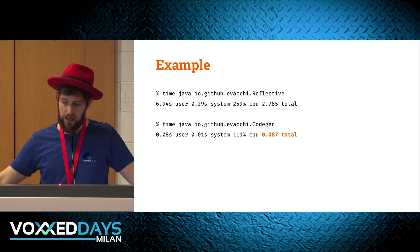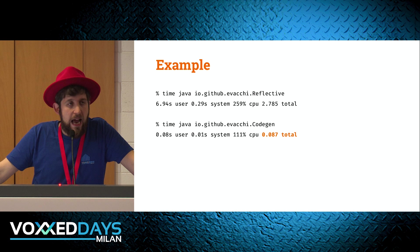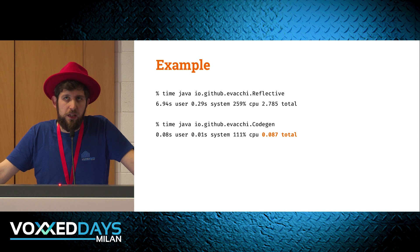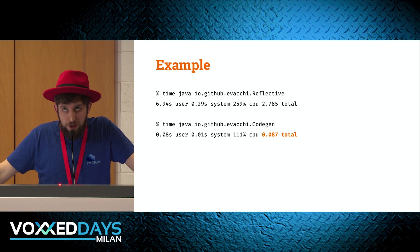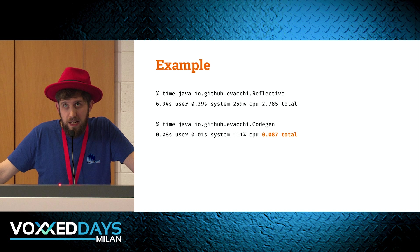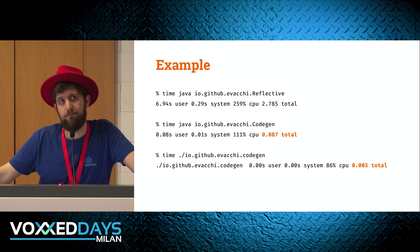Now let's get back to our running example and see the runtime results. Our example took a little under three seconds on the JVM and couldn't be compiled to native binary because it used reflection. How fast does the code-generated version run on the JVM? It's already two orders of magnitude less — 87 milliseconds. And because this version is code-generated and uses no reflection, we can compile it through native image. Now it takes three milliseconds — for free.